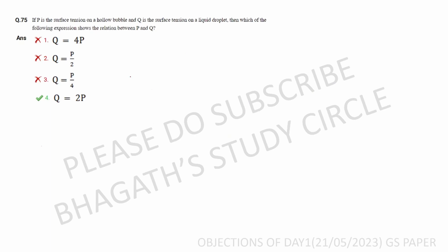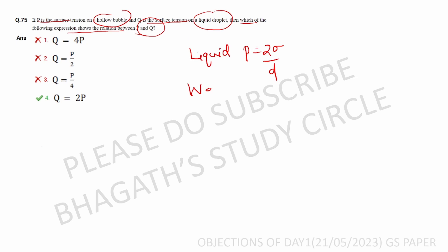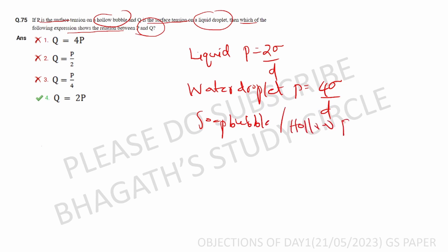Next question: if P is the surface tension on a hollow bubble and Q is the surface tension on a liquid droplet, which expression shows the relation between P and Q? For a liquid jet the pressure equals 2 sigma by d. For a water droplet the pressure equals 4 sigma by d. For a hollow bubble the pressure equals 8 sigma by d.